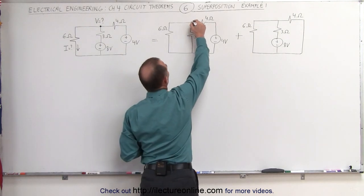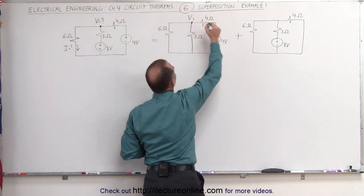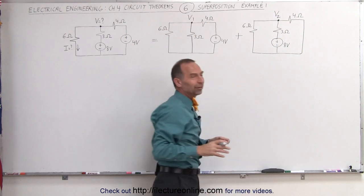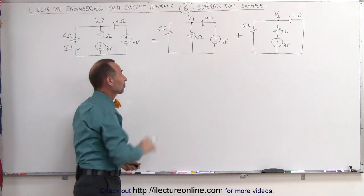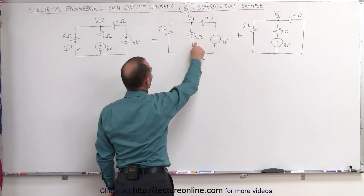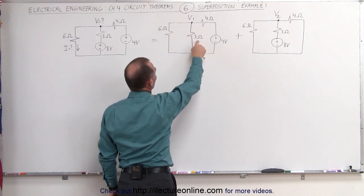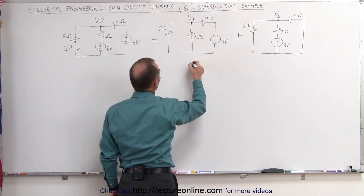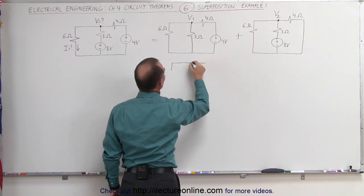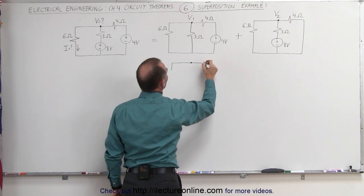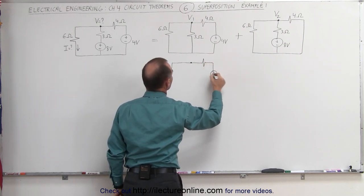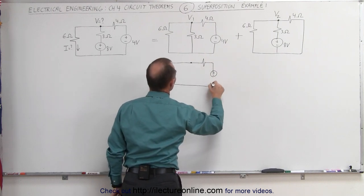Let's call the voltage at the first node V1, and the voltage at the second node V2. They're not sources, but the voltages at those two nodes. We can see that we have a parallel circuit with a 6 ohm resistor and a 3 ohm resistor. If we redraw the equivalent circuit, we have the node, a 4 ohm resistor, the source, and then the equivalent resistor representing the parallel combination.